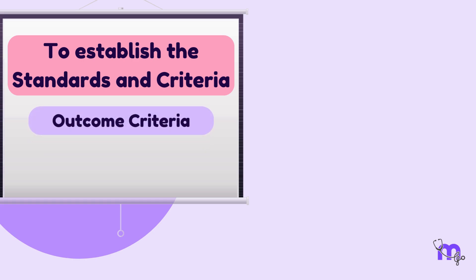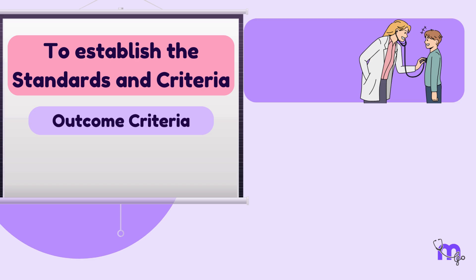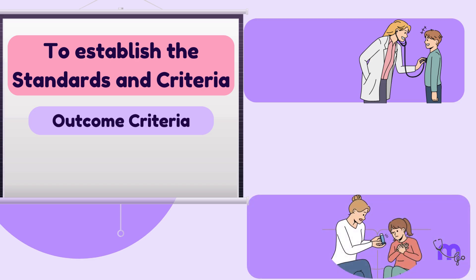Examples of the criteria for outcome could include alterations in health status or behavior resulting from health care which could be positive or negative.